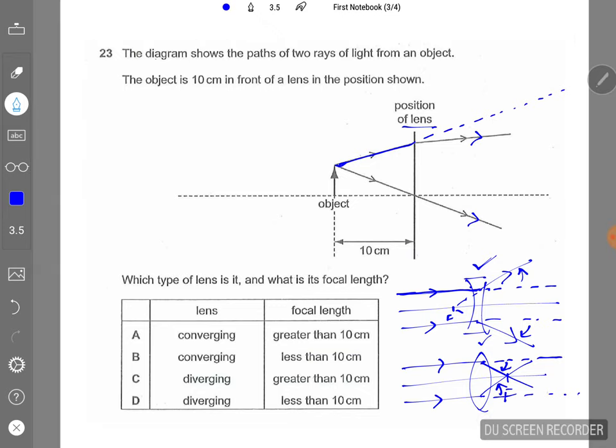But because of this lens, this ray actually closes in. So this will give you a hint that this is a converging lens.